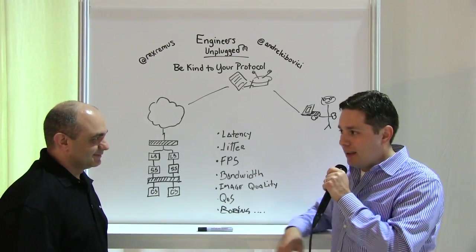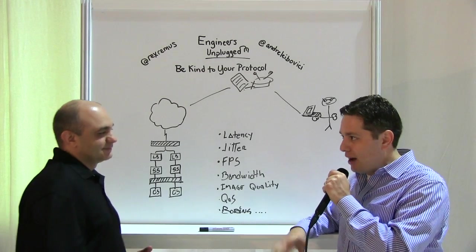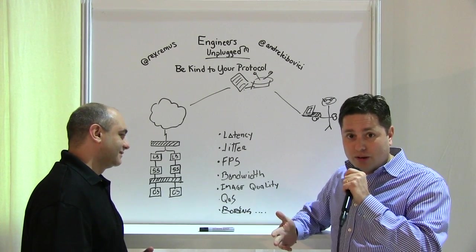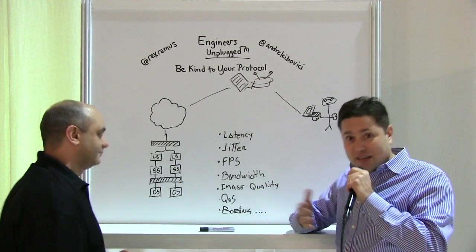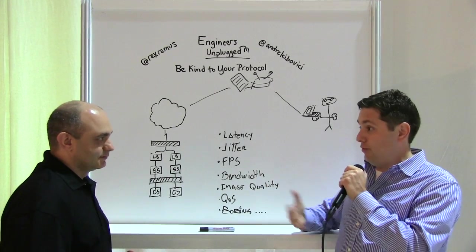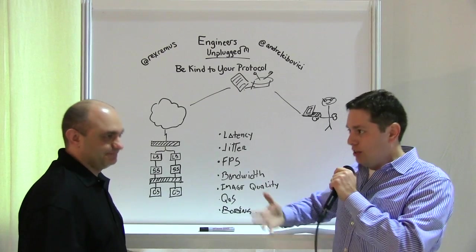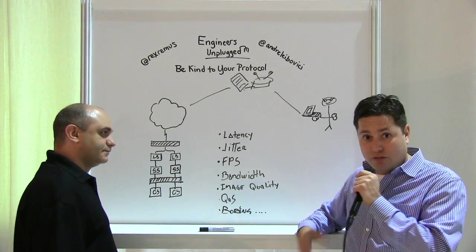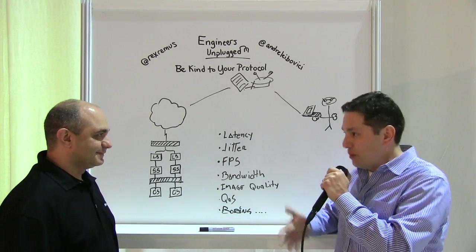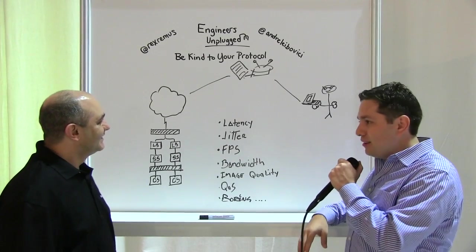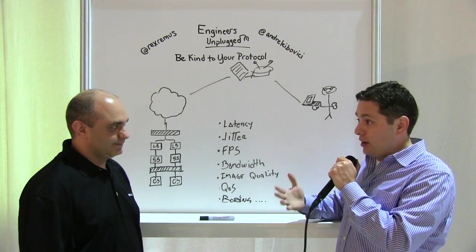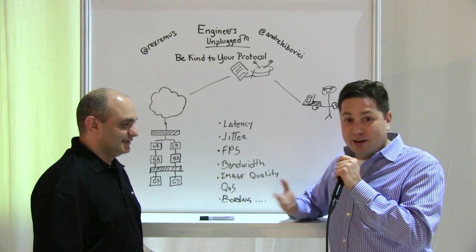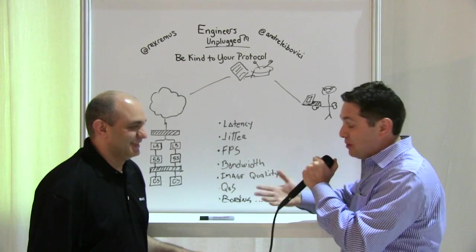Chuck, I always talk to customers and they always come up with questions about why is my VDI session performing slow, what's happening to my protocol. There are a number of things that can go wrong, specifically in different environments. You need to fine-tune — whether you're using RDP or PC over IP — there are things we need to implement or remove to make things work properly. Why don't you give us a brief overview? You are a specialist in PC over IP and display protocols here at VMware. What are the most critical pieces?